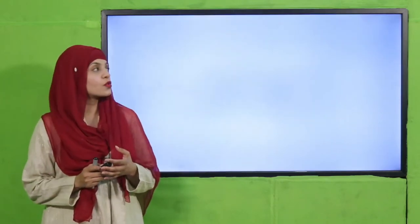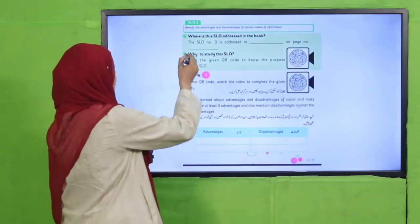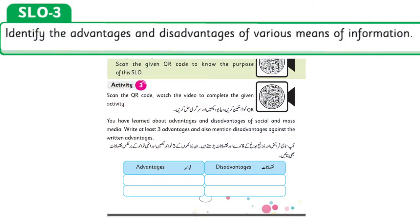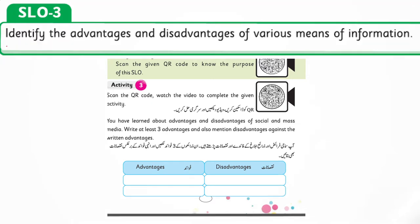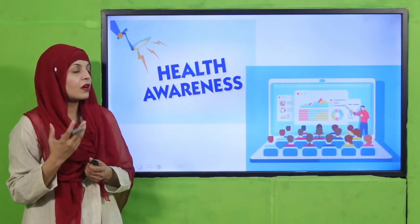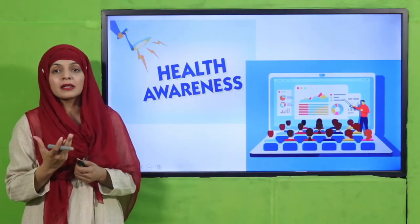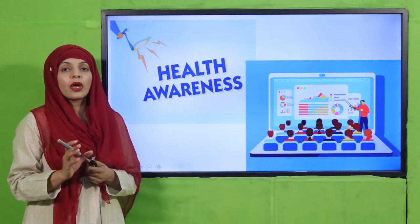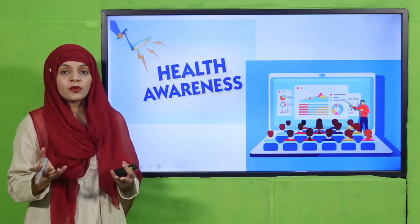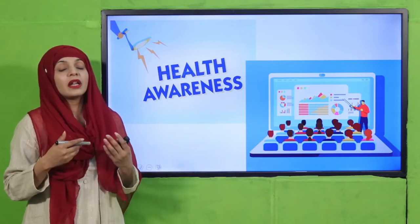According to this SLO, students will be able to identify the advantages and disadvantages of various means of information. In the previous SLO, students have studied what is mass media and what is social media. Now the children will talk about the advantages and disadvantages and will know which medium has what advantages and disadvantages.